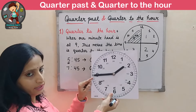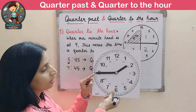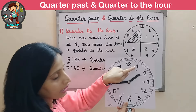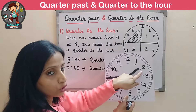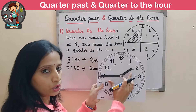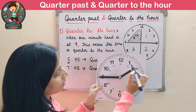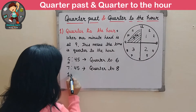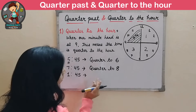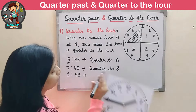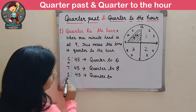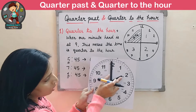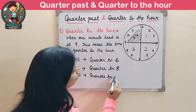One more example. Our minute hand is at 9, so there are 45 minutes. The hour hand is between 1 and 2, but it is almost at 2, closer to 2. So the time will be quarter to 2, or we write it as 1:45. After 15 minutes it will be 2 o'clock, so that's why we write quarter to 2.